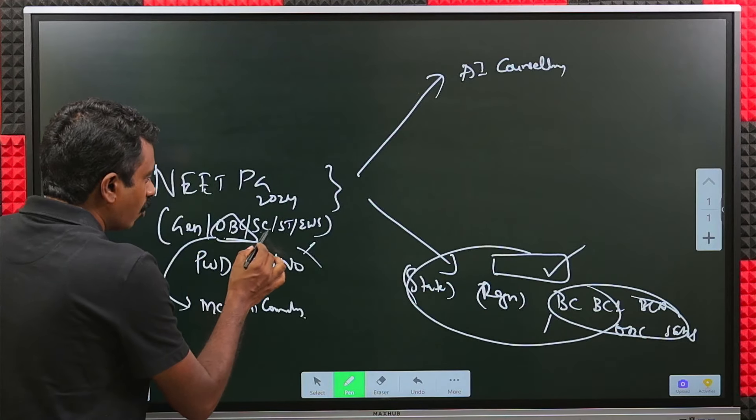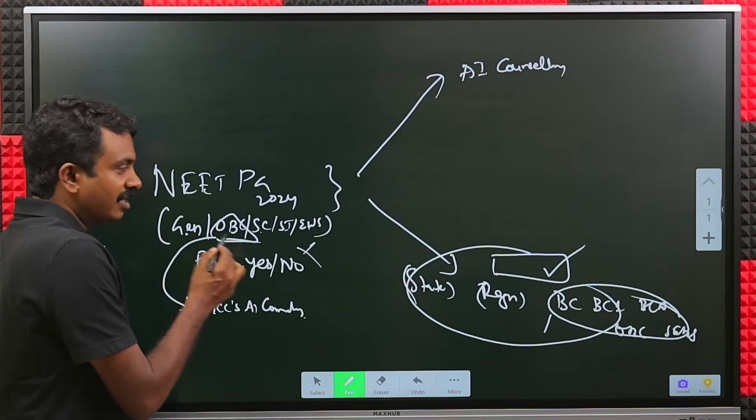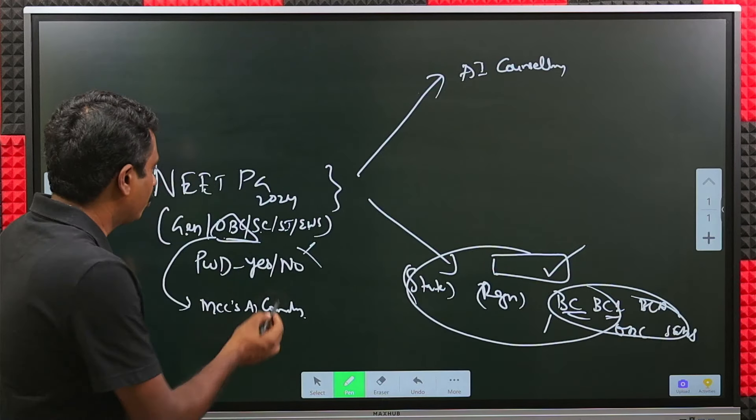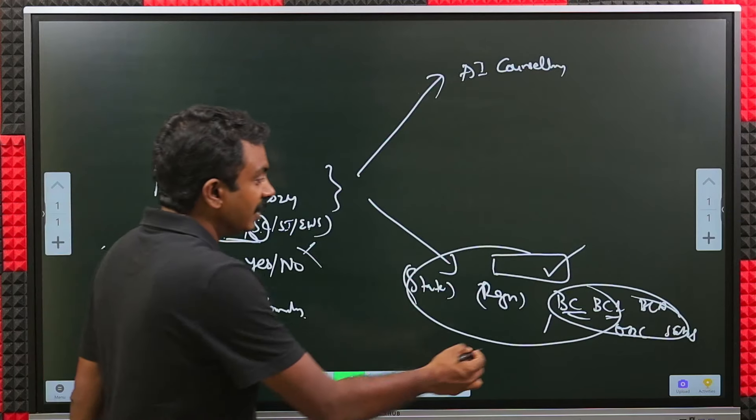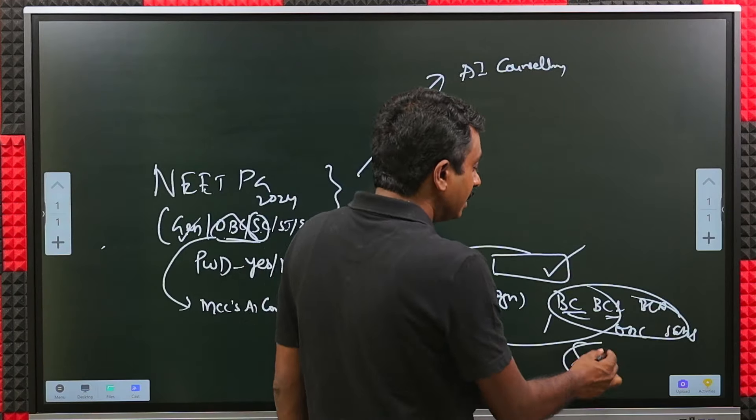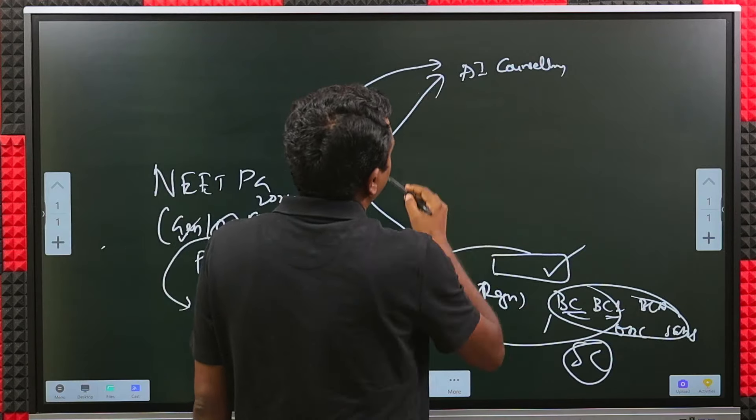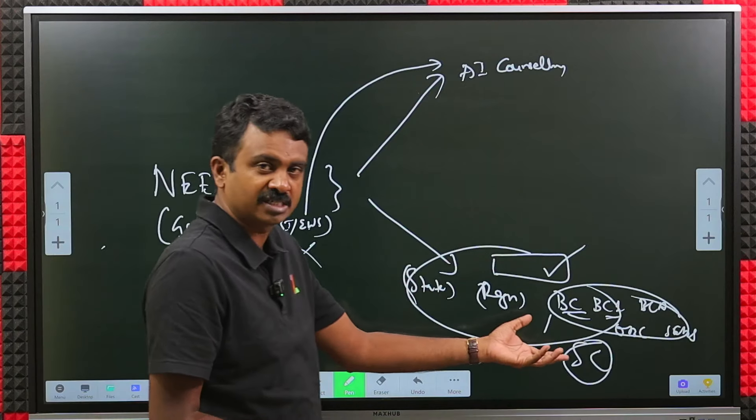State will not take this general OBC, SC, ST data. So irrespective of whether you have applied as general over here, in state you can apply as BC, BC1. You are an SC candidate, you missed applying as SC, you applied as general in All India Counseling. In state you can apply as SC category. But for All India, exactly this information flows into All India. MCC will automatically pick up.